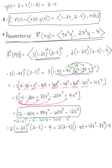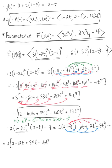Distributing 2 through to each term, we have 2 multiplied by (2 minus 12t plus 24t squared minus 16t cubed). Then distributing the (2 minus t) factor, the minus t distributes through to give minus t plus 6t squared minus 12t cubed plus 8t to the fourth, minus 4.